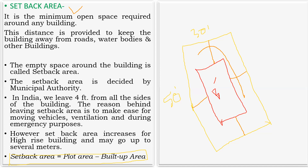We leave the setback area for ventilation — if you construct right up to the boundary without leaving setback, you won't get good ventilation. During emergencies it is also needed. In normal houses people often don't follow this, feeling they are wasting space, but for high-rise buildings these rules must be followed to get approval from the administrative department. The setback area increases for high-rise buildings and may go up to several meters.